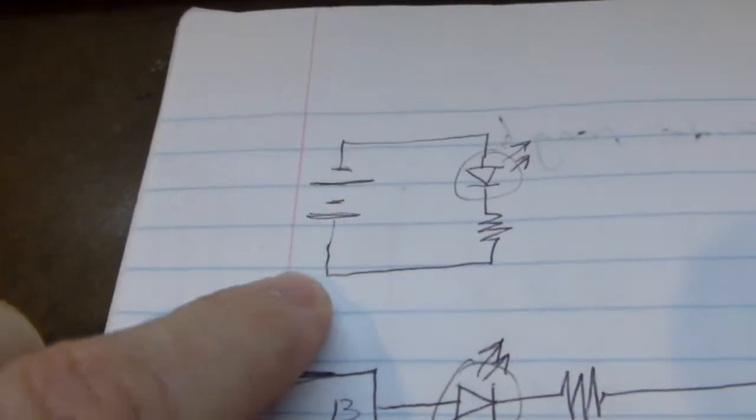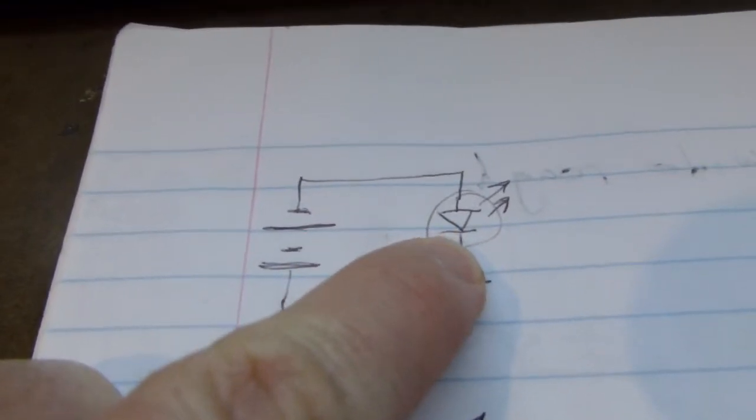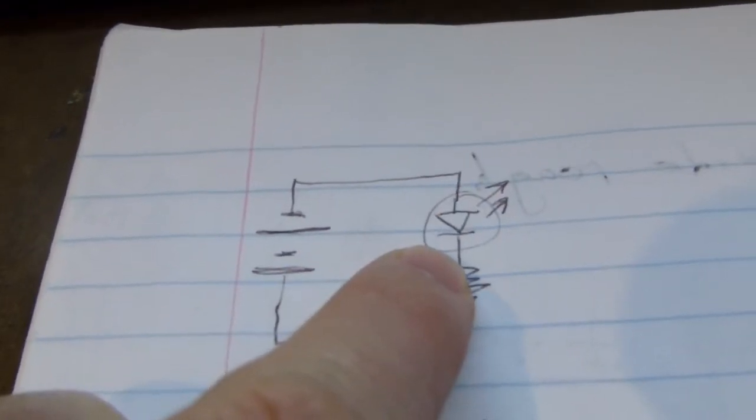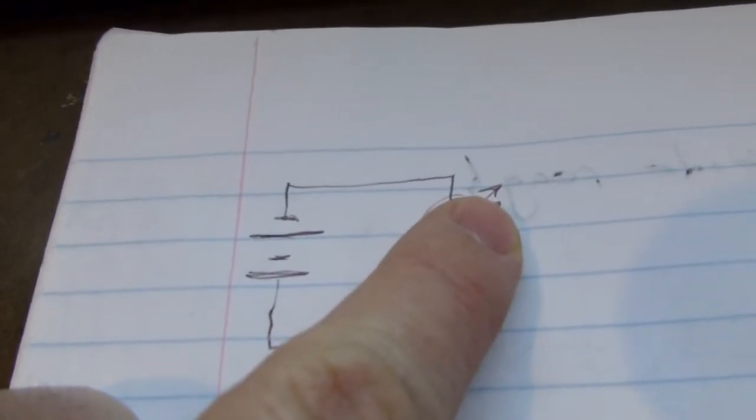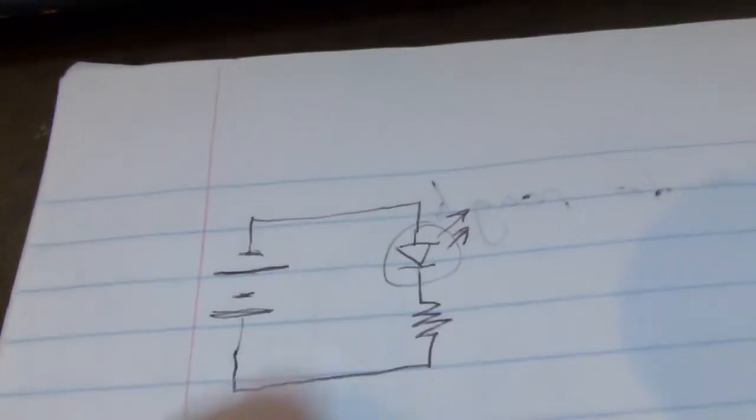This is the circuit that we built at the beginning of the last section which is just an LED. This is an LED, you see the arrow with the line on it there is a diode. If you draw a circle around it and then have the arrows leading away from it that indicates that it's a light emitting diode, that's supposed to be the light leaving it.